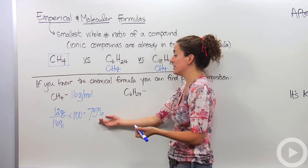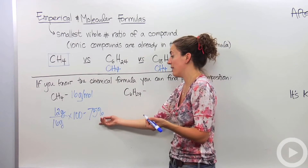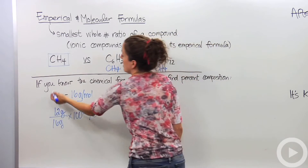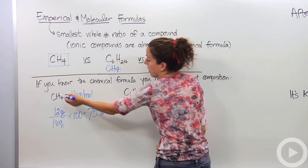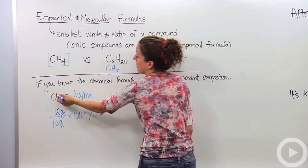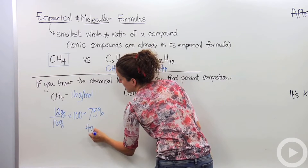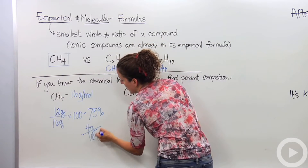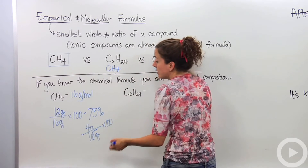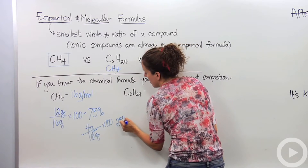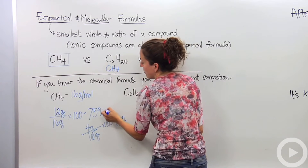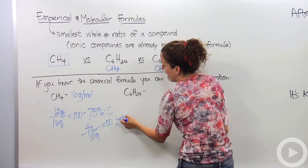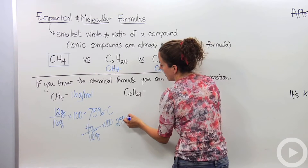What about hydrogen? You can subtract 75 from 100 to get 25%, but let's calculate it to make sure. Hydrogen has a mass of 4 — 1 gram for each of the 4 atoms — so a mass of 4 grams. The total mass is 16 grams, multiply by 100, and indeed you get 25%. So carbon is 75% of methane, and hydrogen is 25% of methane.